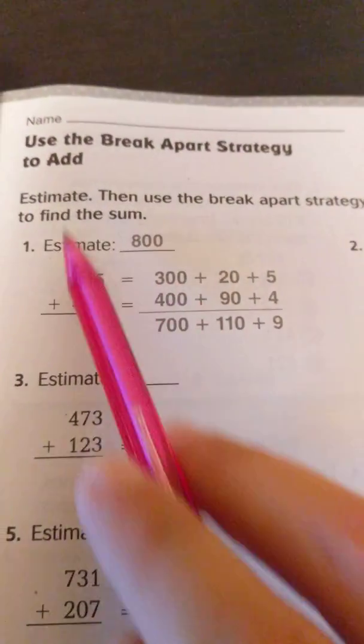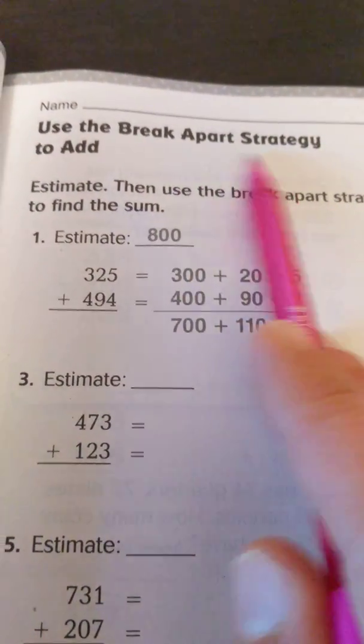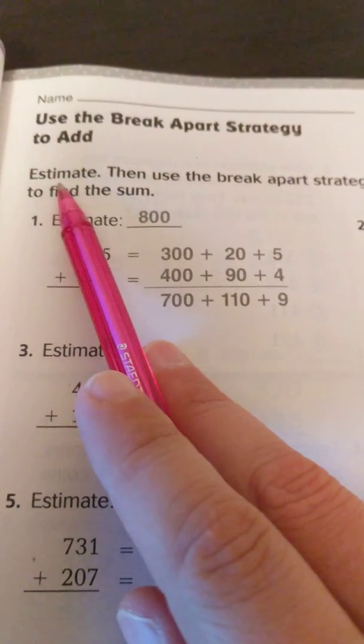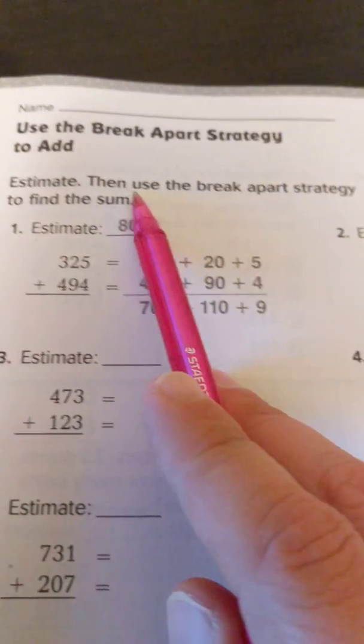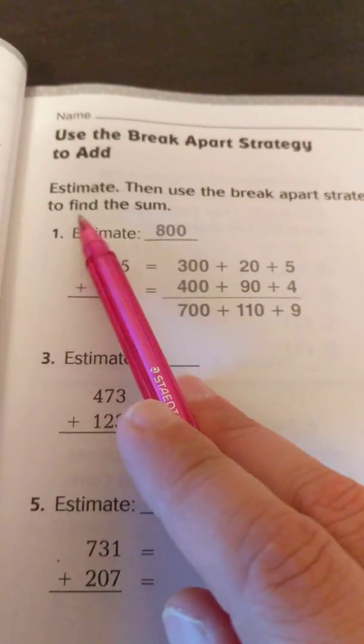This is 3rd Grade Go Math Lesson 1.6 and today we're going to use the break apart strategy to add. So the directions say estimate, then use the break apart strategy to find the sum.